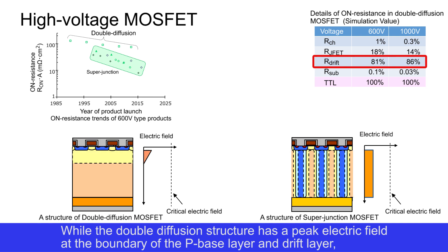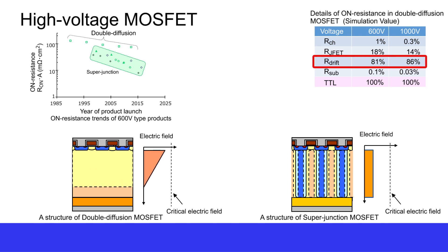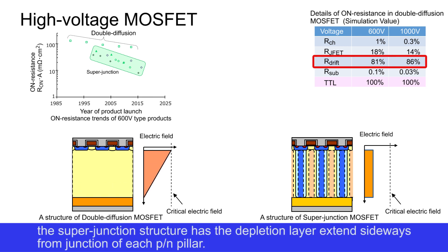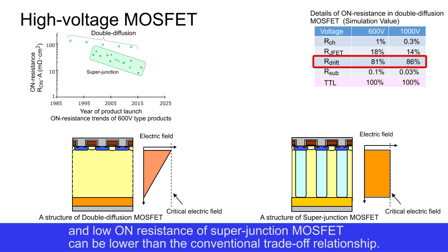While the double diffusion structure has a peak electric field at the boundary of the P base layer and drift layer, and the depletion layer extends downwards, the super junction structure has the depletion layer extend sideways from the junction of each P-N pillar. For this reason, the concentration of the N-type layer can be made higher than that of the double diffusion structure, and the on-resistance of super junction MOSFETs can be lower than the conventional trade-off relationship.